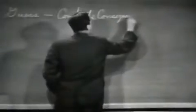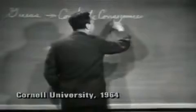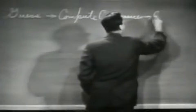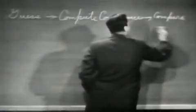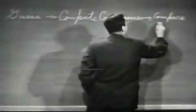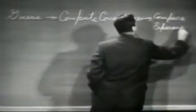Then we compute the consequences of the guess to see what, if this law that we guessed is right, what it would imply. And then we compare those computation results to nature — or we say compare it to experiment or experience. Compare it directly with observation to see if it works.